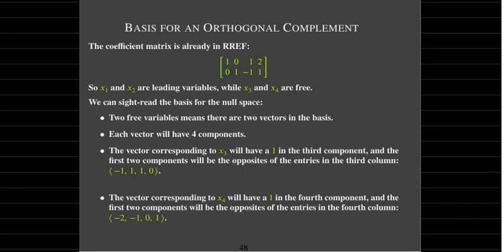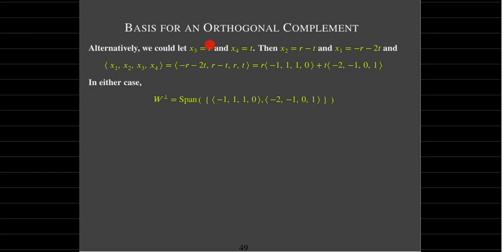We can verify: taking (−2, 1, 0, 1) dotted with (1, 0, 1, −2) gives zero, and dotted with (0, 1, −1, 1) also gives zero. If sight reading is not clear, you can use parameters R and T, find the general solution to the homogeneous system, and write it as a linear combination of two vectors — those vectors are your basis vectors. Either way, you get your basis vectors for W-perp.